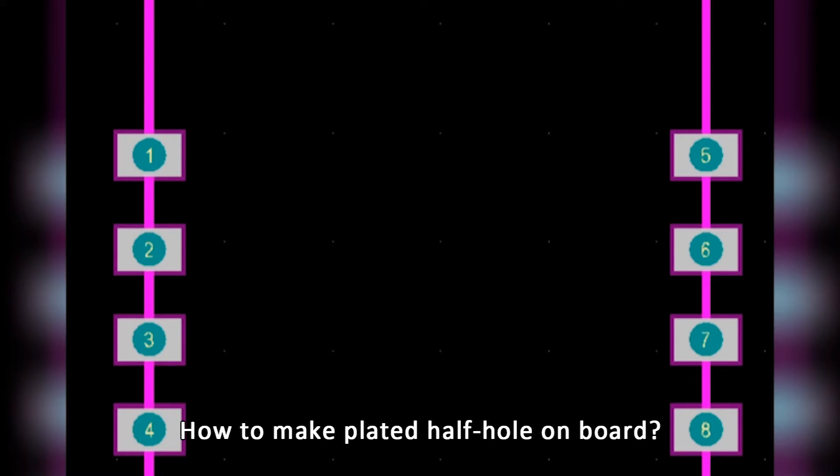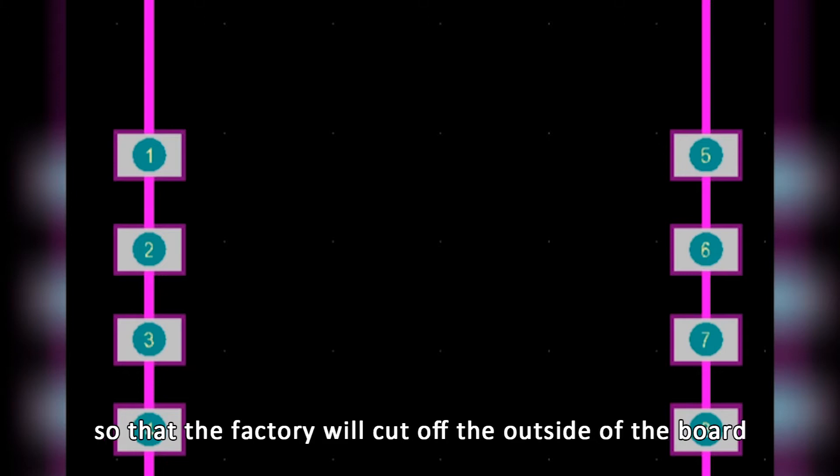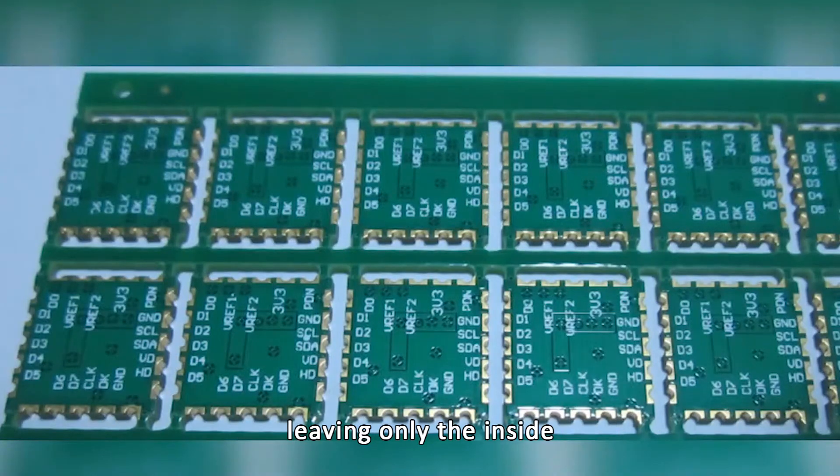How to make plated half holes on a board? When the PCB layout is finished, place the pads on the edge of the board on a coupon so that the factory will cut off the outside of the board, leaving only the inside.